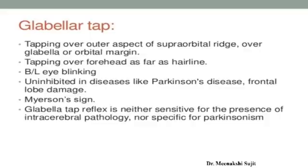Next examination is the glabellar tap. This involves tapping over the outer aspect of the supra-orbital ridge over the glabella or orbital margin — tapping over the forehead midline near the nose. When you tap there, automatically the baby will blink its eyes. This is the glabellar tap response. If the baby blinks normally it is a normal sign. In some diseases like Parkinson's disease or frontal lobe damage, the baby's response will not be normal, which we can identify in this examination.